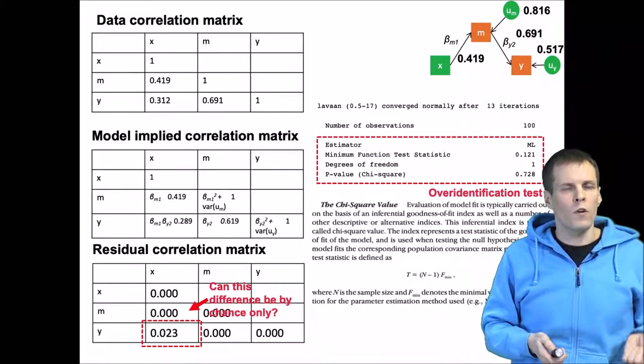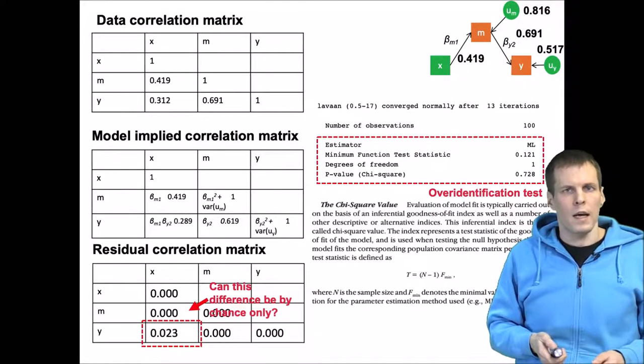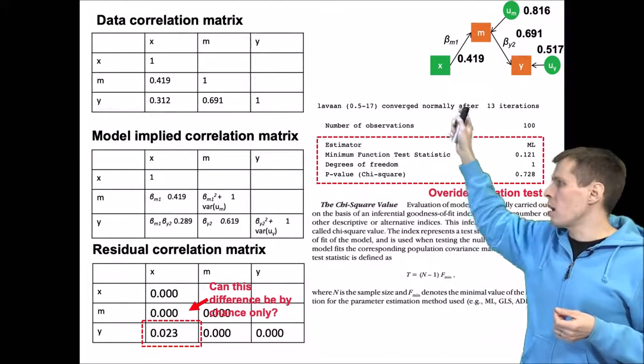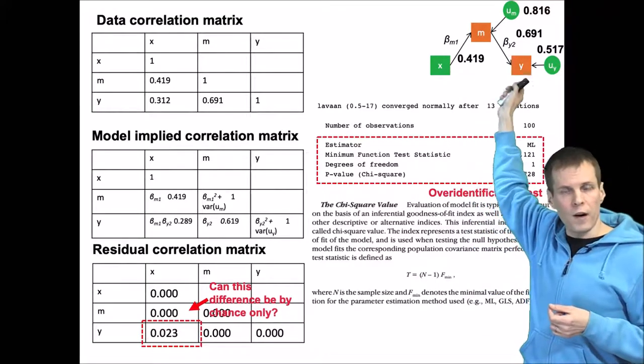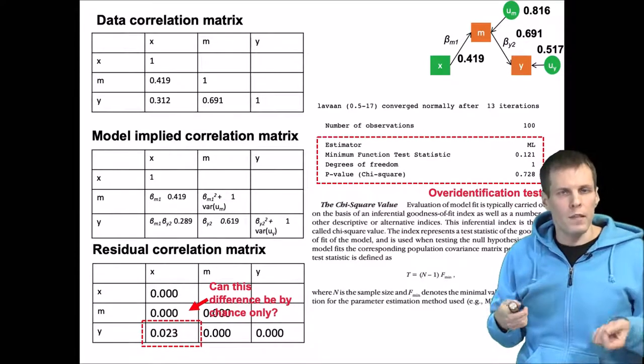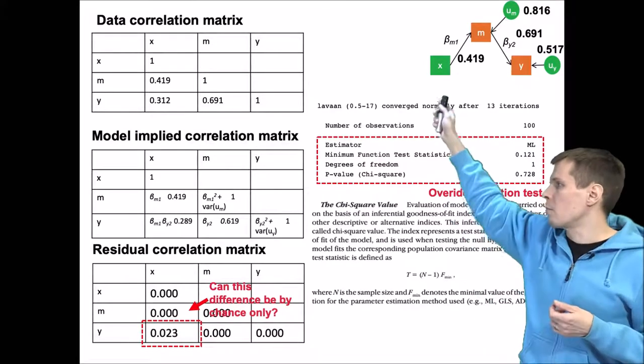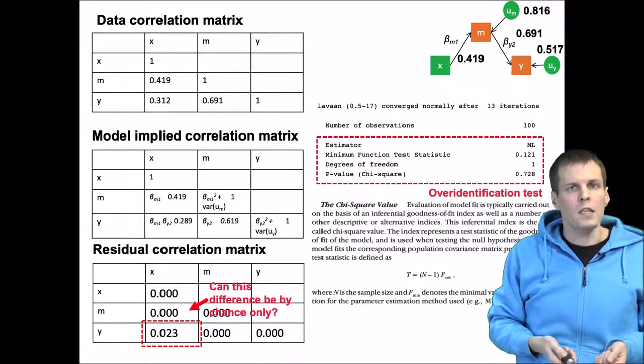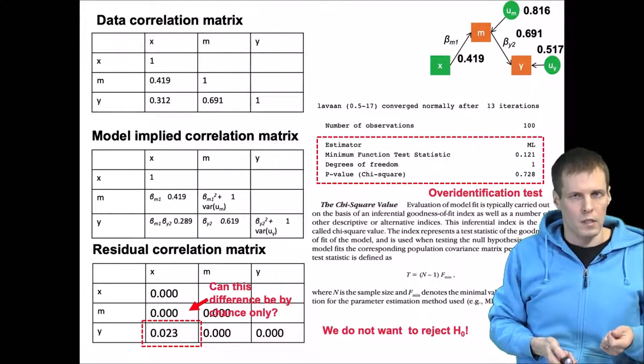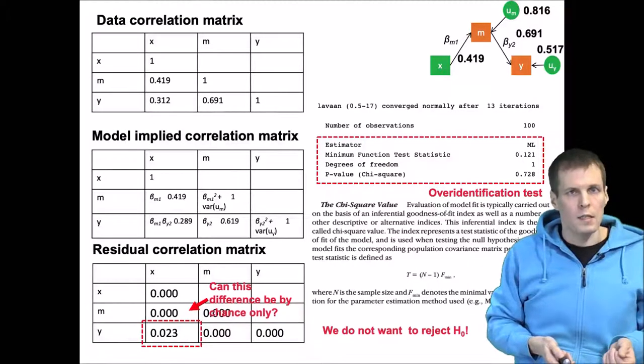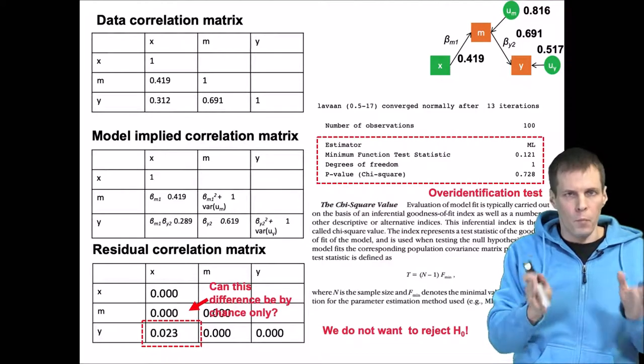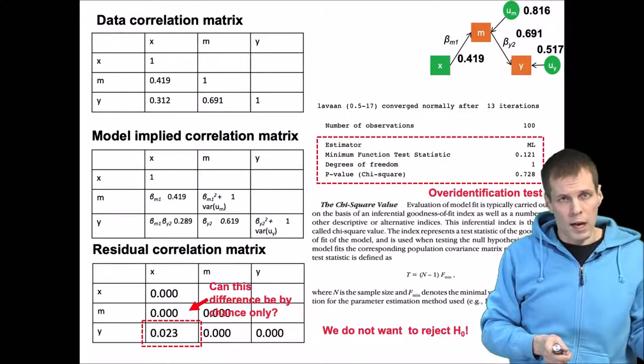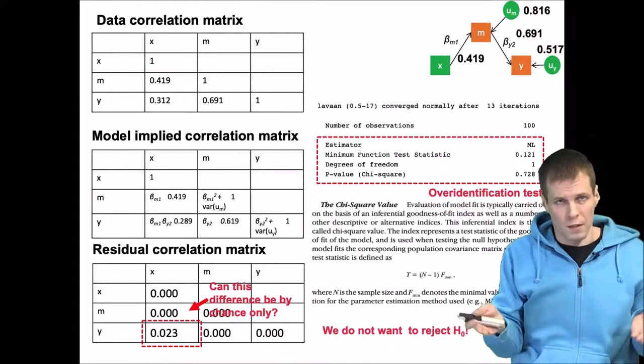This is called an over-identification test or chi-square test, and the reason we refer to it as an over-identification test is that it requires that this model is over-identified. The degrees of freedom is positive and we are leaving something out from the model. For example, we could add the regression path here but we choose to leave it out. In this case, we want to not reject the null hypothesis because the null hypothesis is that the model fits the data perfectly. If we reject that model, then we would have to conclude that the model actually doesn't fit perfectly and then we would have to do something about it.